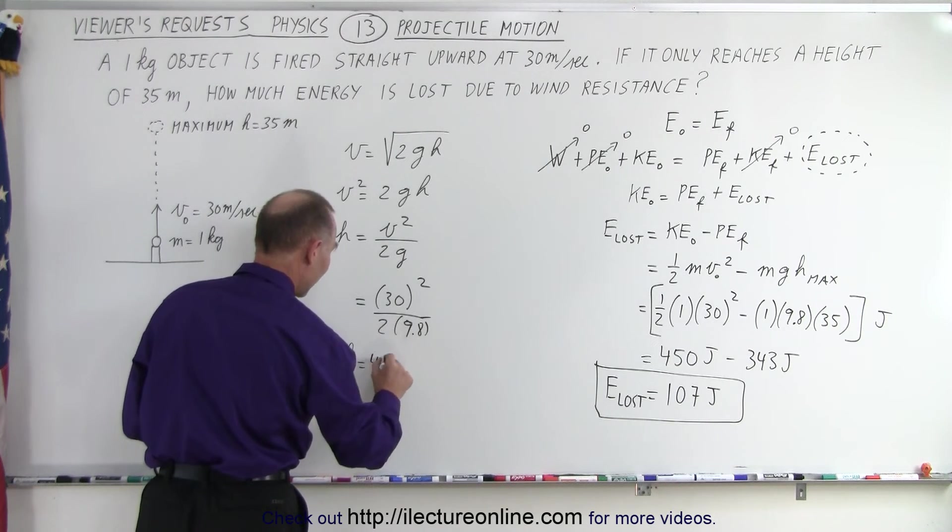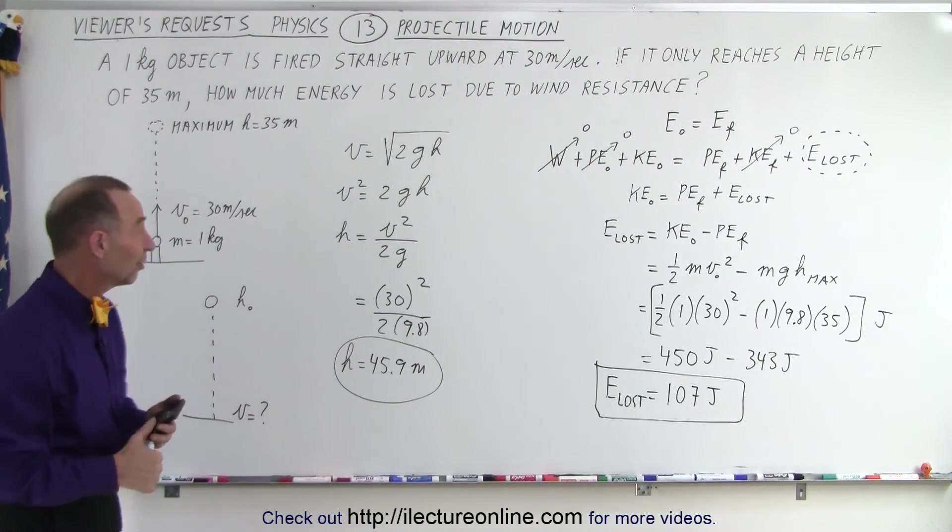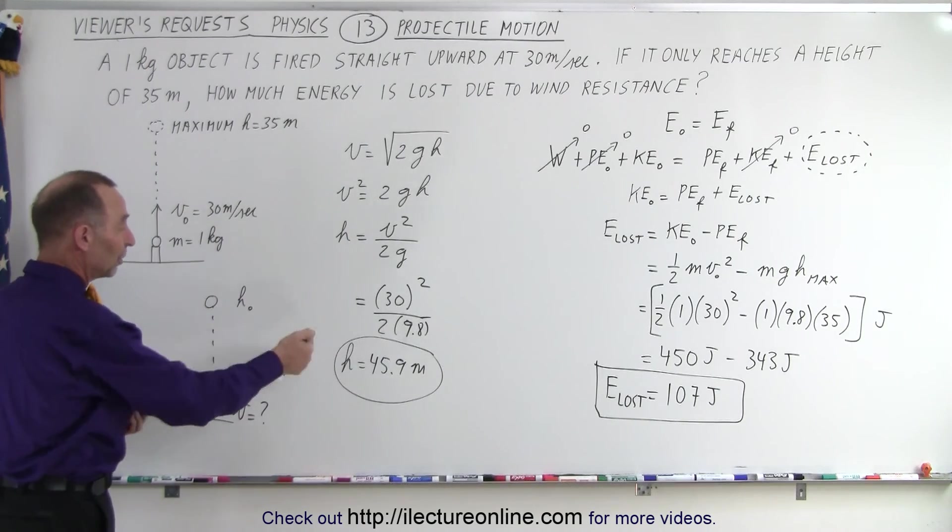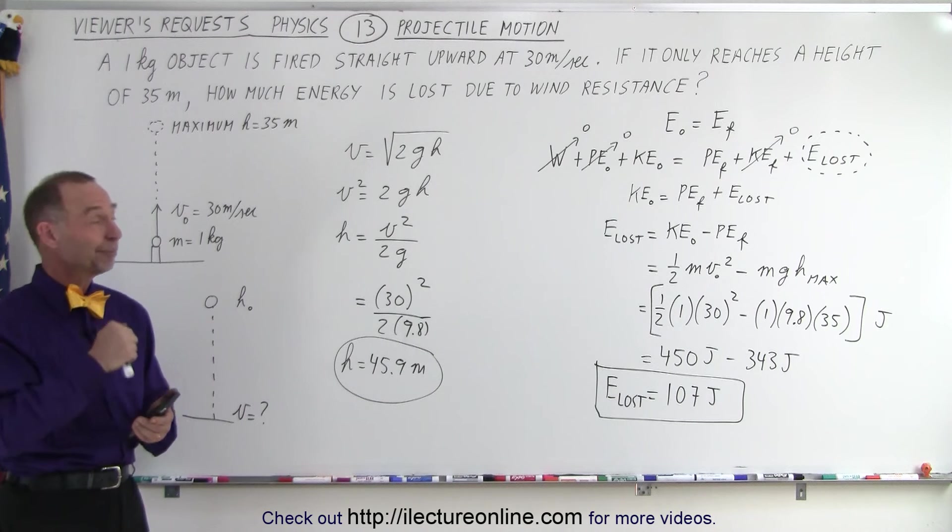So, H equals 45.9 meters if there was no wind resistance. But since it only went 35 meters, some of the energy was lost. How much? 107 joules. And that is how it's done.